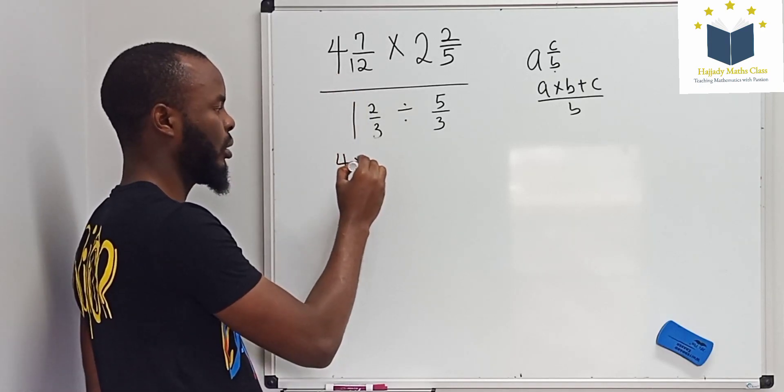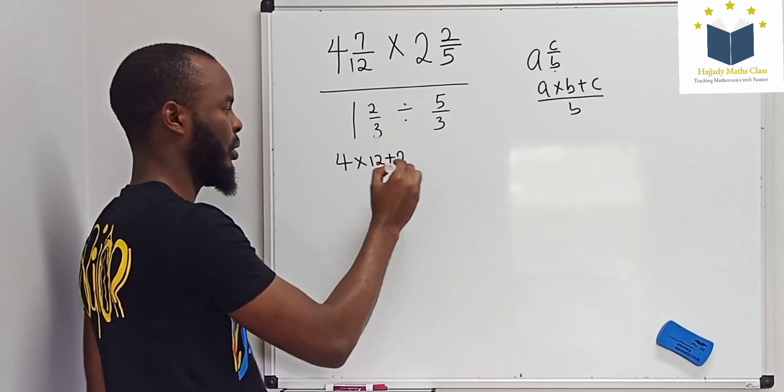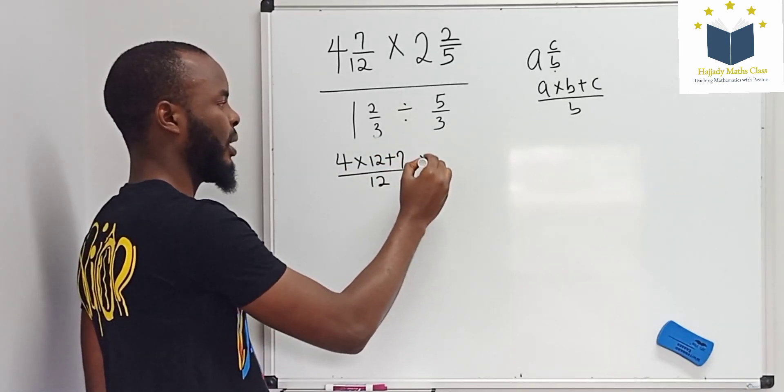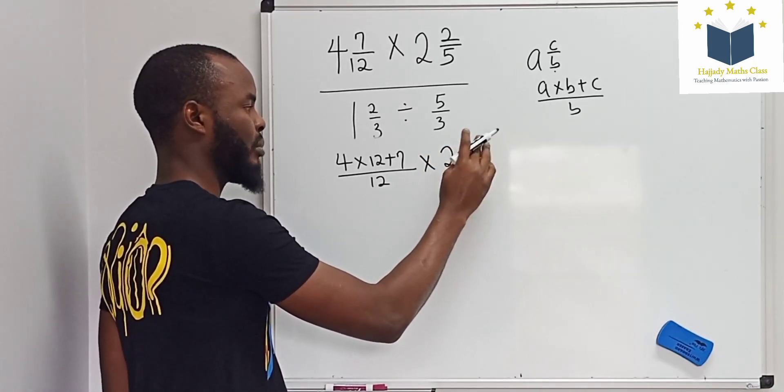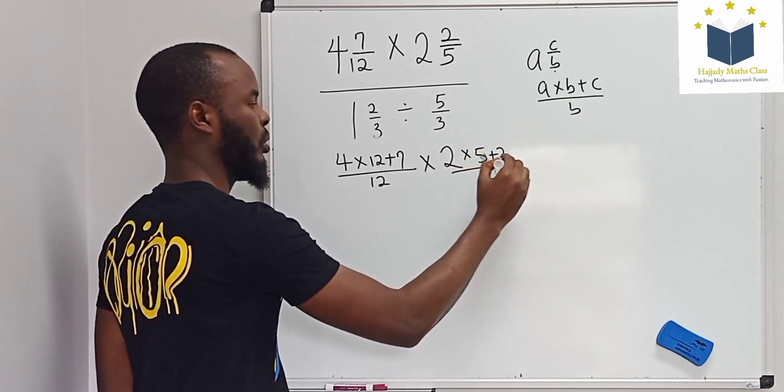So my whole number which is 4 multiplied by the denominator plus the numerator over the denominator, multiplied by 2 times 5 plus 2 over 5.